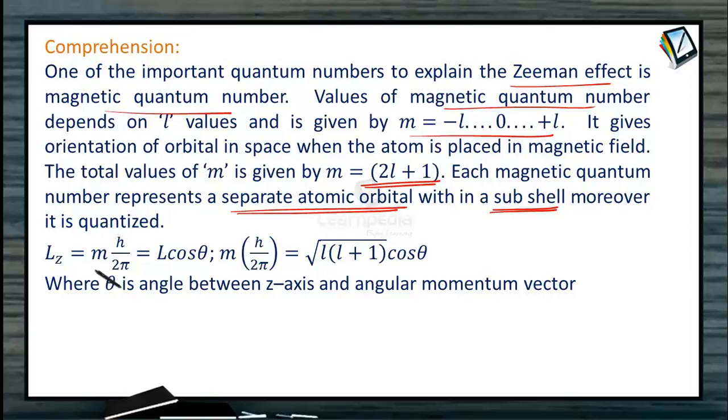Moreover it is quantized and is given by Lz = M(h/2π)cosθ, which equals √(L(L+1))cosθ, where θ is the angle between z-axis and angular momentum vector.